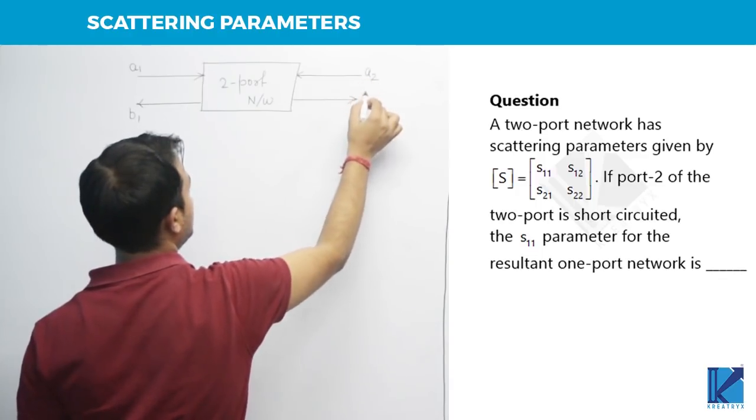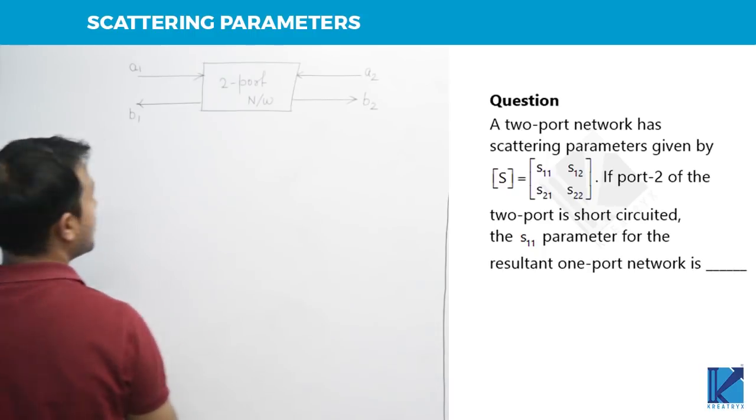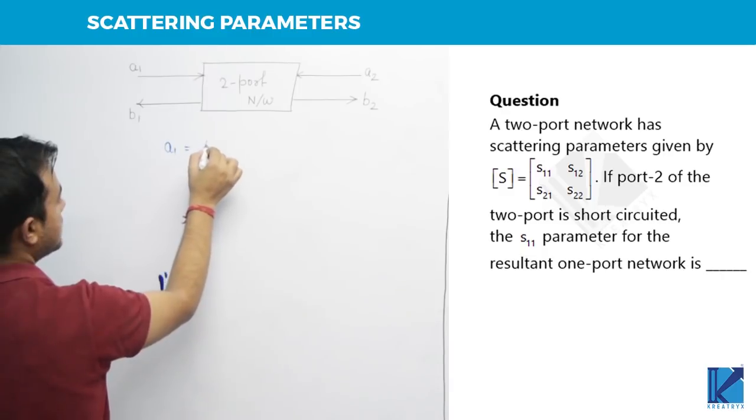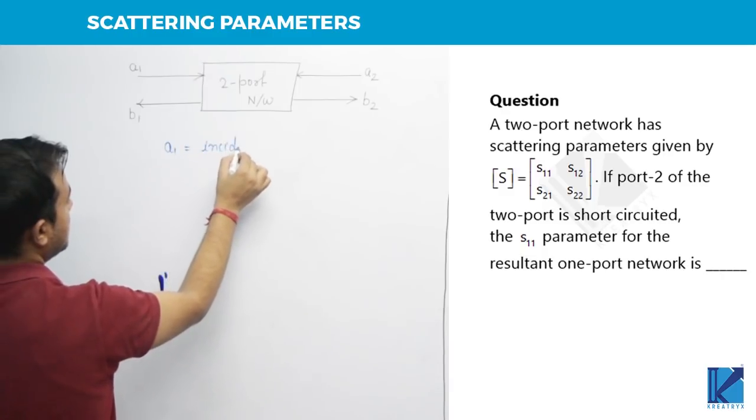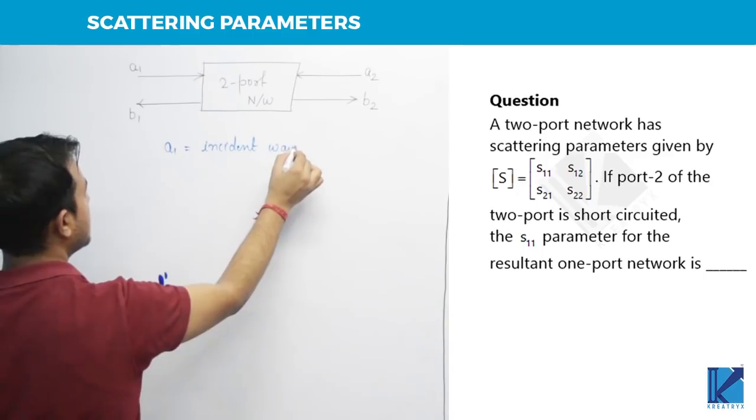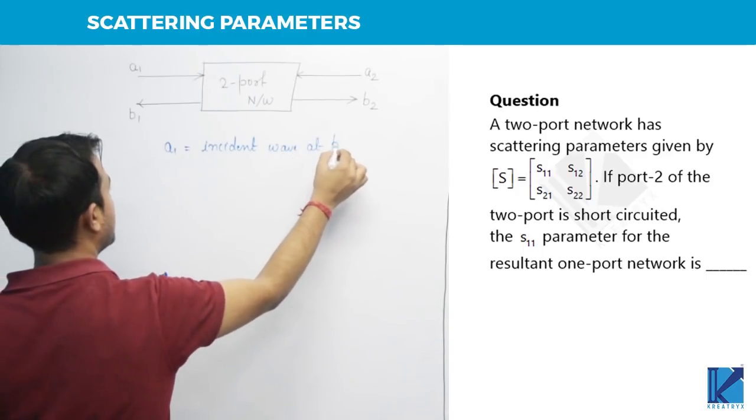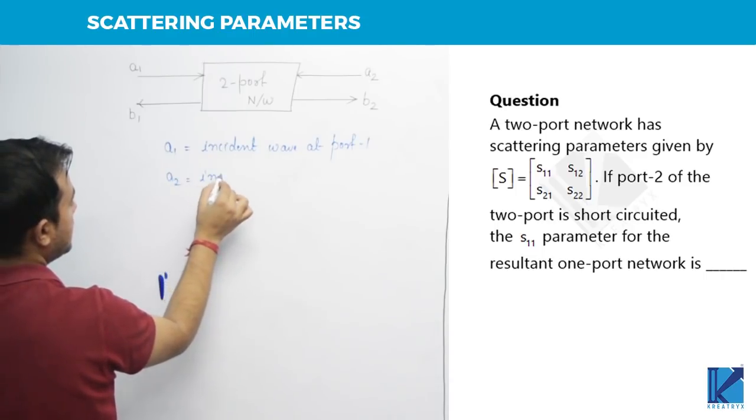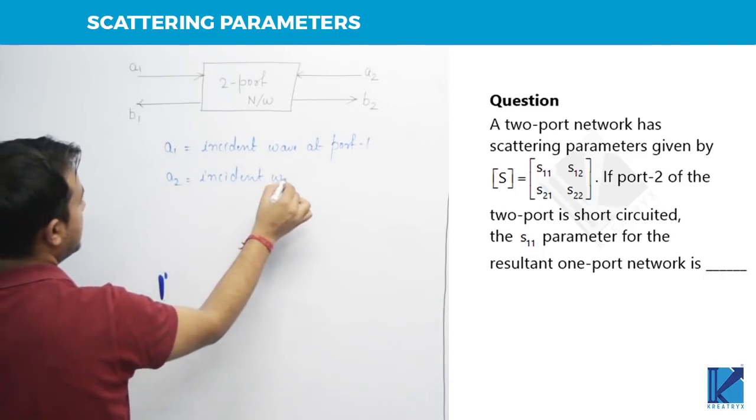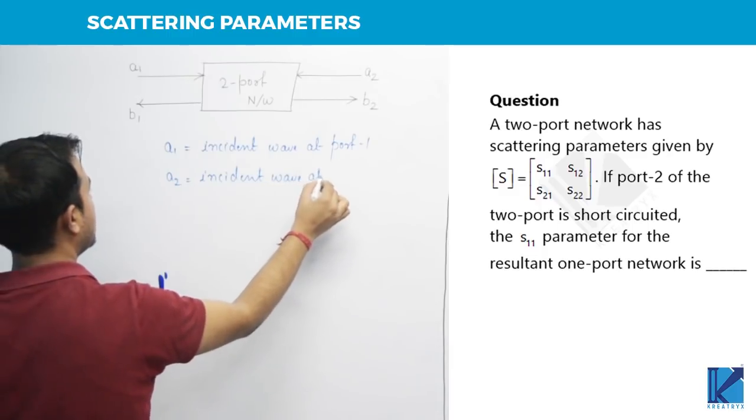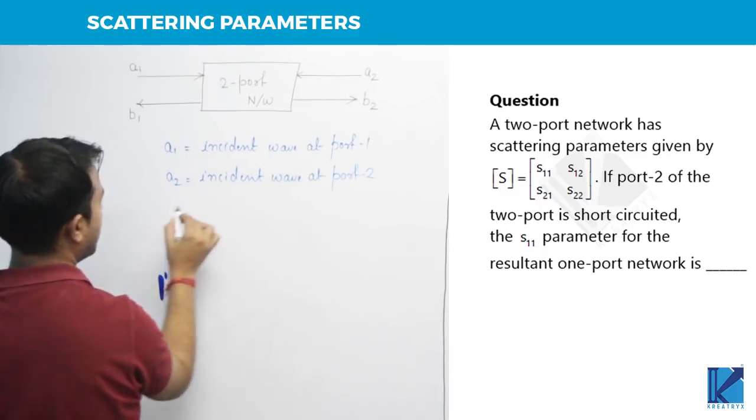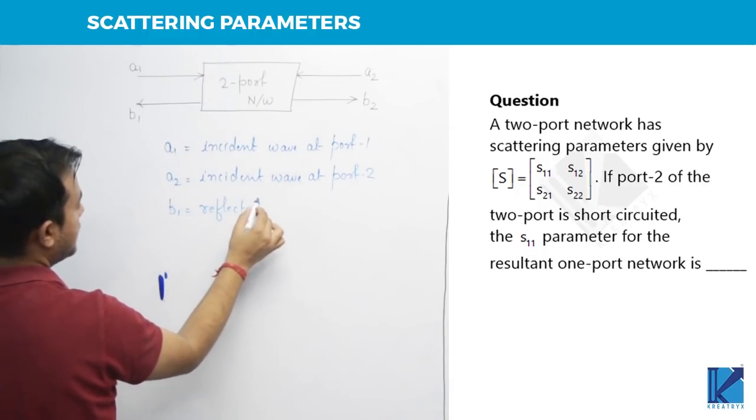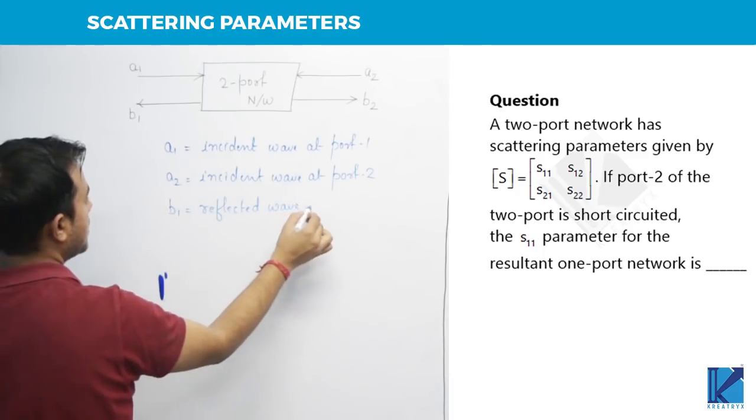This is said to be A2 and B2. Now basically, this A1, what is it? A1 is the incident wave at port 1. Similarly, A2 is incident wave at port number 2.